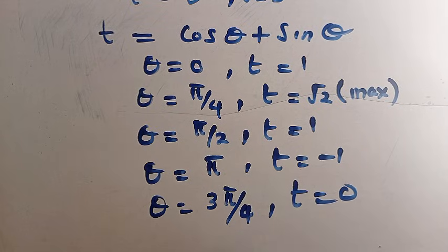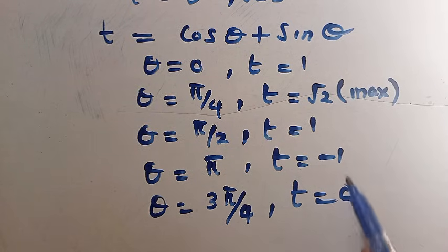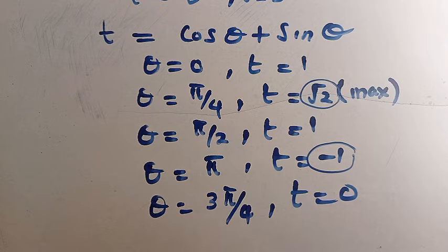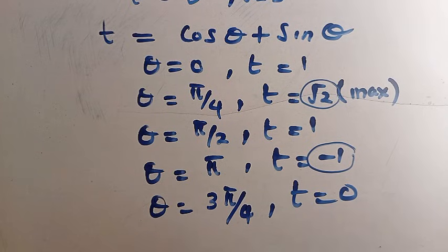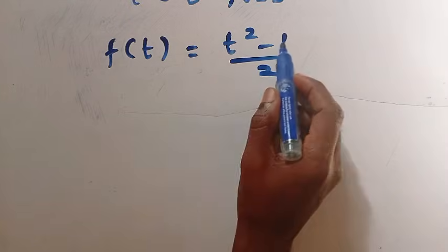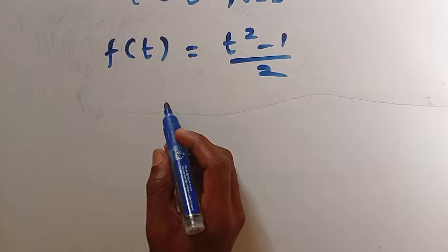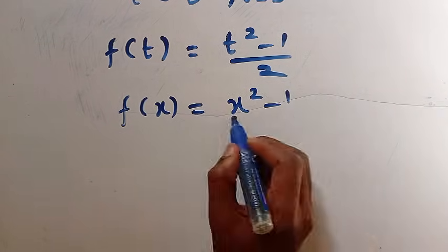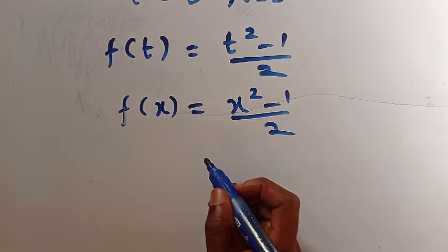Therefore, the minimum value of t is −1 and the maximum is √2. So the domain of t is the closed interval [−1, √2]. Therefore, f(t) = (t² − 1) / 2. Changing the variable back to x, we have f(x) = (x² − 1) / 2, and this function is a polynomial.